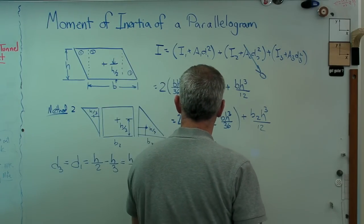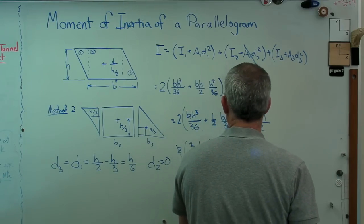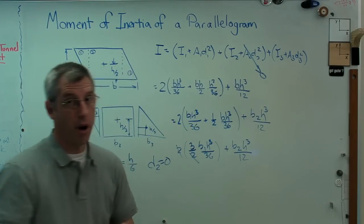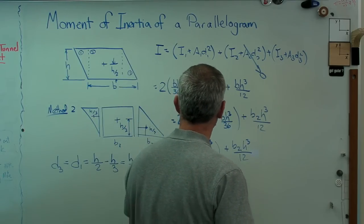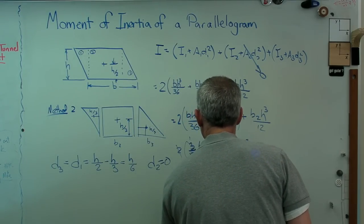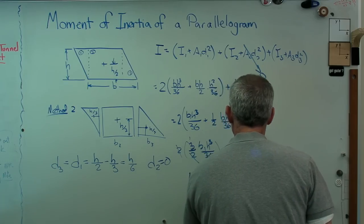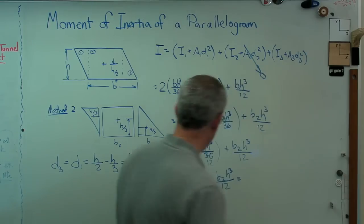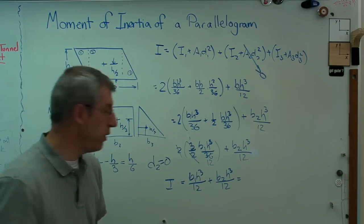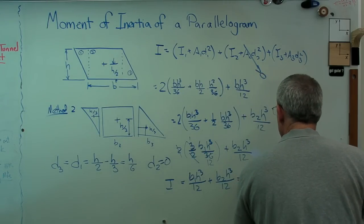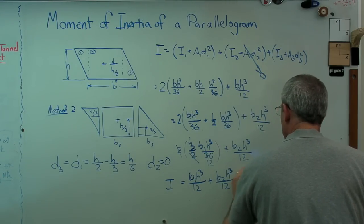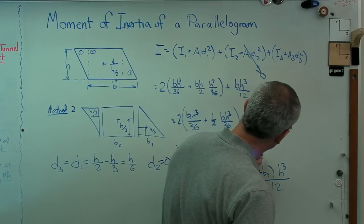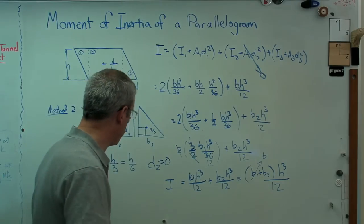Plus b2 h cubed over 12. Almost there, you can tell where this is headed. Divide it out by that and I get 12, and I get b1 h cubed over 12 plus b2 h cubed over 12, and that's going to equal I. And that is, okay, so this is what I said I wanted. Bring it on home here. All I have to do now is pull out the b1 b2 12.